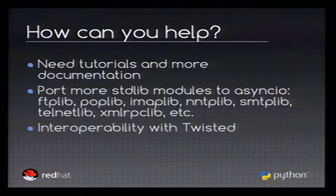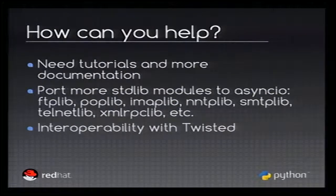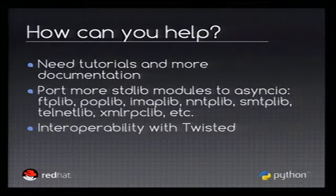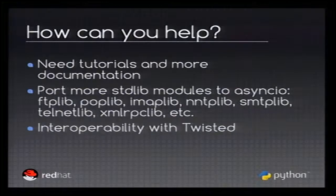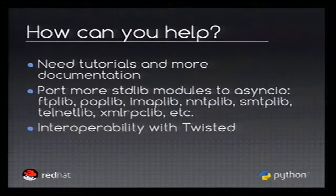Finally, how can you help? In my opinion, the bottleneck of AsyncIO is a lack of documentation. I spend a lot of time working on the documentation, but it's a reference for the API — it's not really something for beginners. We need a tutorial starting from the very beginning: what is a coroutine, what is a task, what is a future, how to put all the pieces together, step by step. We also need more documentation in general. And maybe a cool project would be to port standard libraries to AsyncIO, because we have many protocols not supported yet — FTP, POP, IMAP, NNTP, SMTP, Telnet, XML-RPC, etc. We just need volunteers to do the job.